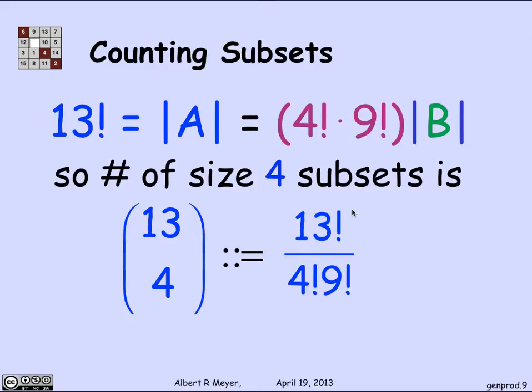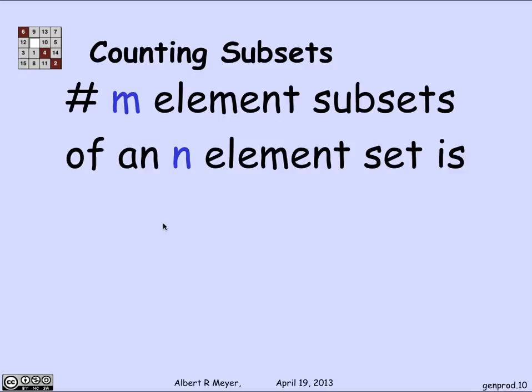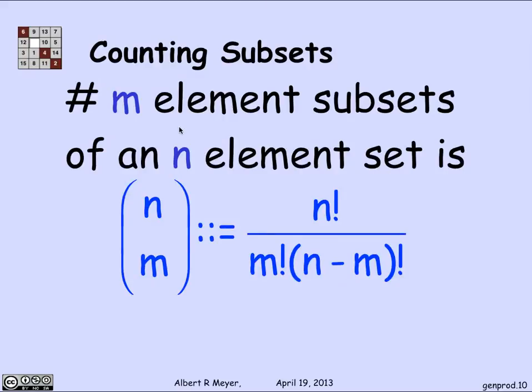And this number comes up so often that it has this special notation called binomial coefficient notation, which we read as 13 choose 4. In general, if I have an N element set, and I'm going to choose a subset of M of them, generalizing this argument, because the 4 and the 9 and the 13 were completely arbitrary and the argument works in general, is that the number of ways to choose a set of M elements among N is N choose M. And the definition of N choose M is N factorial over the M factorial ways to permute the first M elements, and the N minus M factorial ways to permute the remaining N minus M elements.